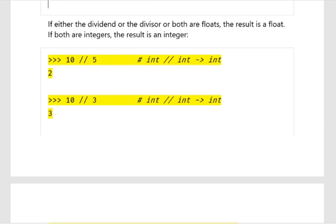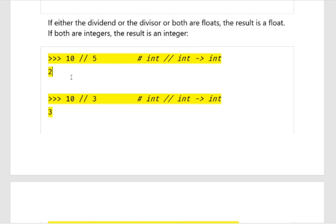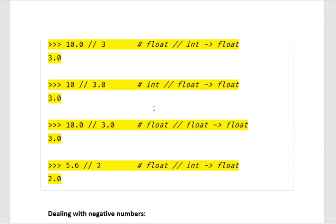In floor division, if both operands are integers the result is an integer, but if either the dividend or divisor is a float, the result is a float. For example: 10 floor division 5 is 2; 10 floor division 3 gives 3. But 10.0 floor division 3 gives 3.0 because 10.0 is float. Similarly, 10 floor division 3.0 gives 3.0, and 10.0 floor division 3.0 also gives 3.0. For 5.6 floor division 2, since it involves a float, you get 2.0.